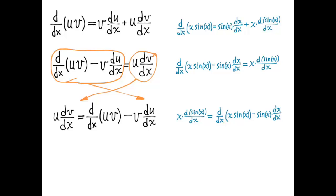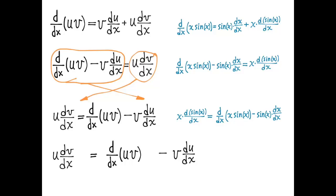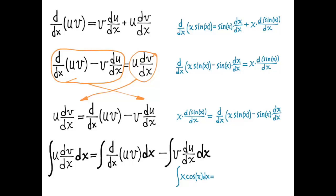Now the next thing I'm going to do is the new part. I'm going to take this equation — rewritten with more space — and integrate each term with respect to x. In our specific case, I'll use the fact that the derivative of the sine function is the cosine function, so I'm integrating x·cos x with respect to x. Then I'll take the derivative of x·sin x, integrate it with respect to x to get back x·sin x, and use the fact that dx/dx equals 1.